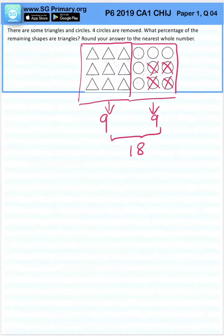When 4 circles are removed, we are left with 14 shapes. And the number of triangles remains the same.